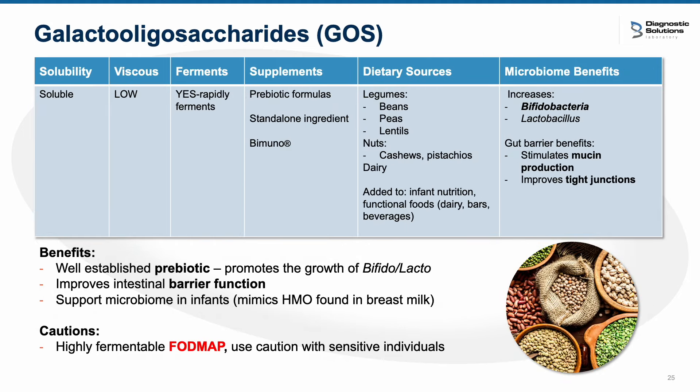Another highly fermentable fiber worth mentioning is GOS, or galacto-oligosaccharides, a well-recognized prebiotic for over 20 years. It is also an oligosaccharide within the FODMAP category, so caution should be used with sensitive individuals. Legumes are a primary dietary source of GOS. The enzyme required to break down GOS is alpha-galactosidase, made by bacteria but also found in digestive enzymes. If the bacteria aren't present to break down this fiber, adding digestive enzyme support such as alpha-galactosidase can improve tolerance. GOS shines in its prebiotic benefits with Bifidobacterium and Lactobacillus, and can also help with gut barrier function by stimulating mucin production and improving tight junctions.